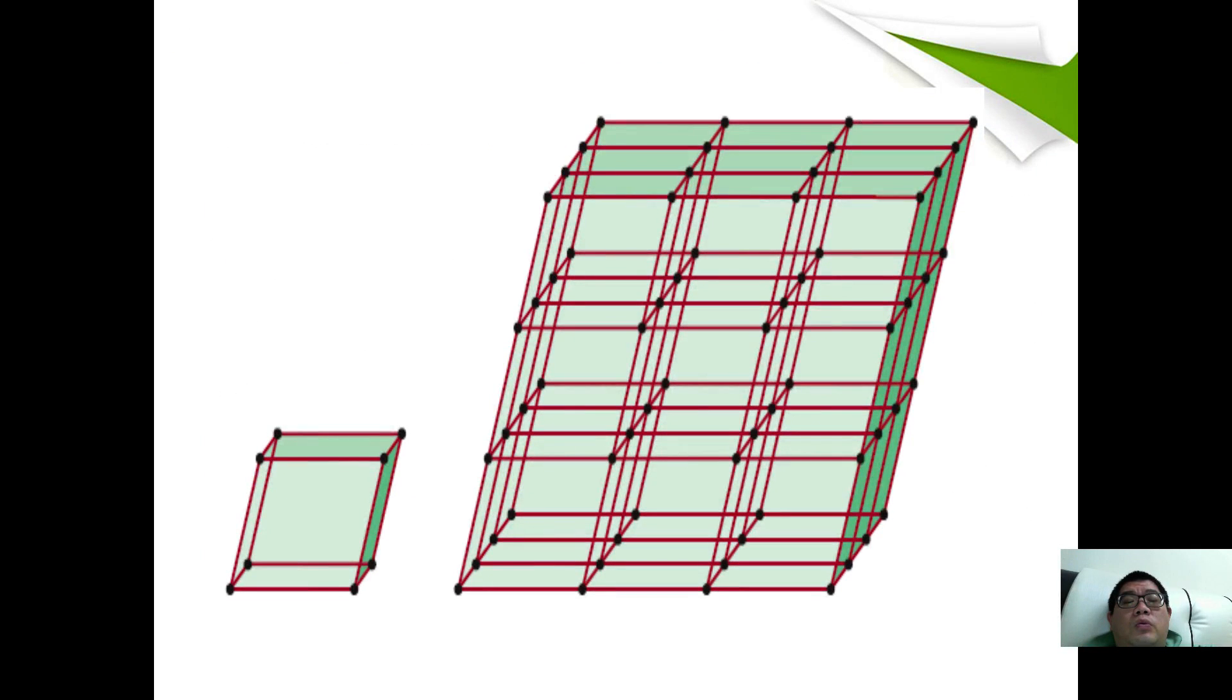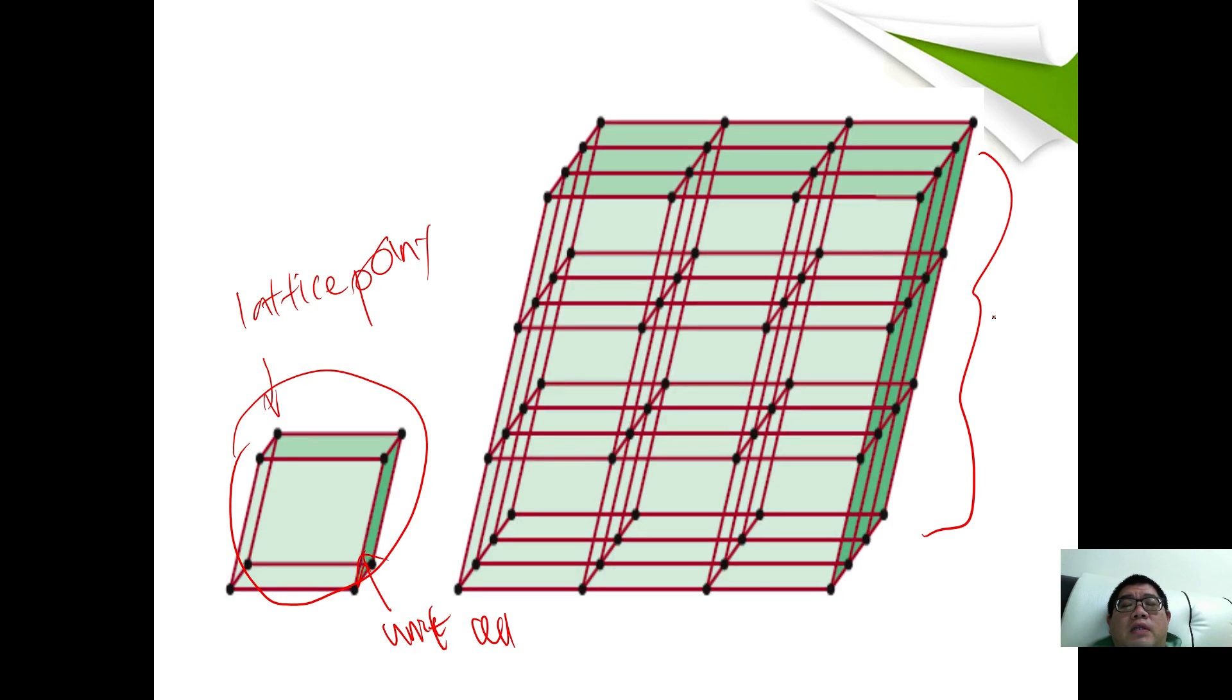This is what we call the lattice point. The picture of the lattice point, we make what we call a unit cell. And the picture of the cells, we make what we call a crystal lattice.